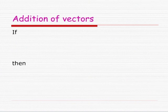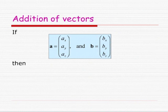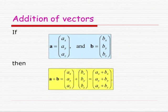Addition of vectors: if we have a vector A written in component form AX, AY, and AZ, and similarly B in component form BX, BY, and BZ, then the sum of the vectors can be written in component form AX plus BX, AY plus BY, AZ plus BZ.